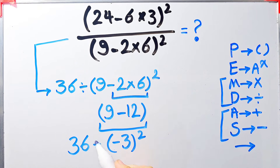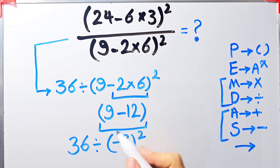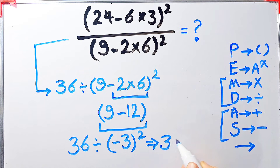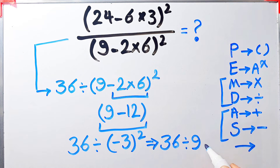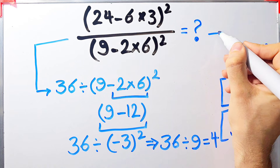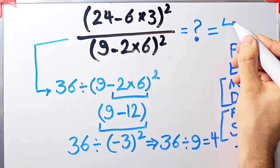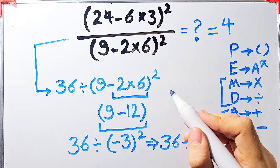We have negative 3 to the power of 2 inside the parenthesis. The question is 36 divided by negative 3 to the power of 2. Now we simplify the exponent: negative 3 to the power of 2 equals 9. The question becomes 36 divided by 9. 36 divided by 9 equals 4. The final answer of this question equals 4.